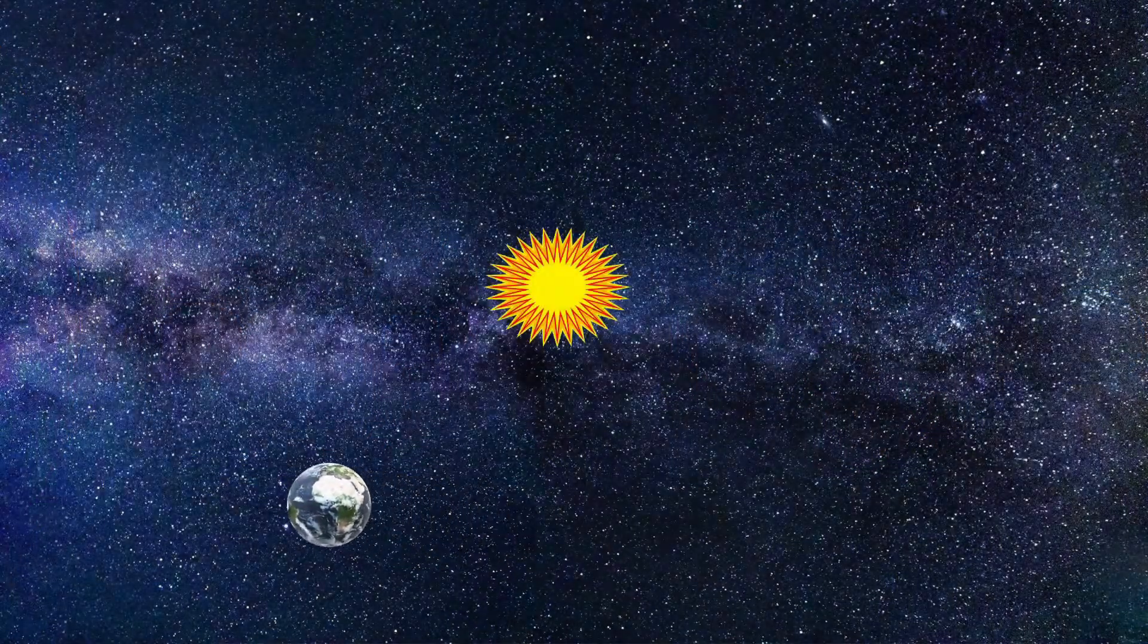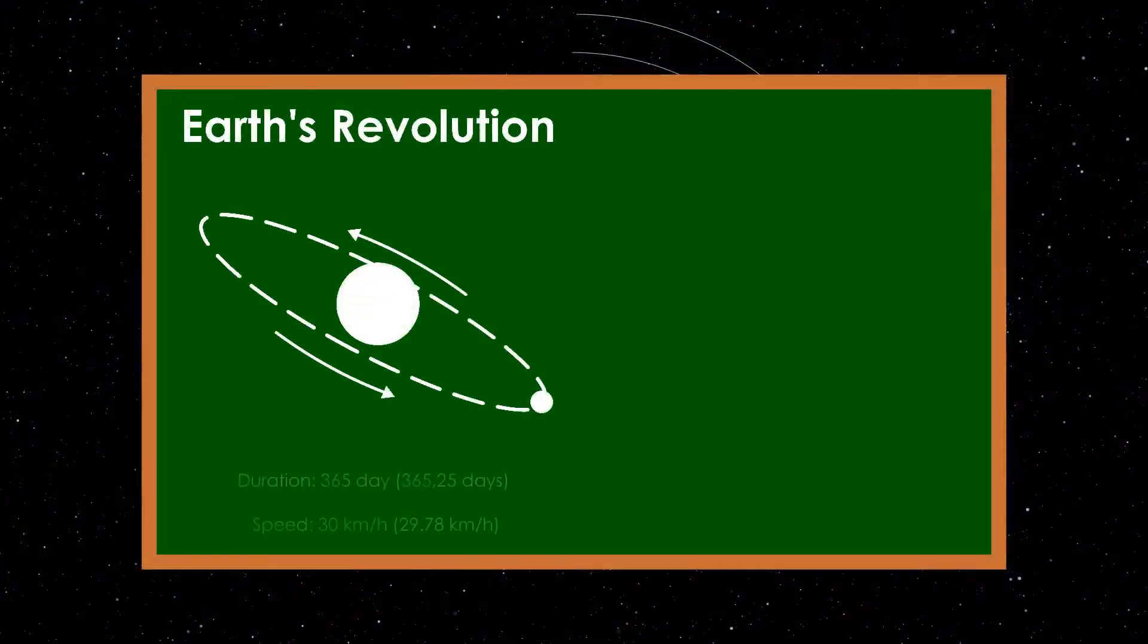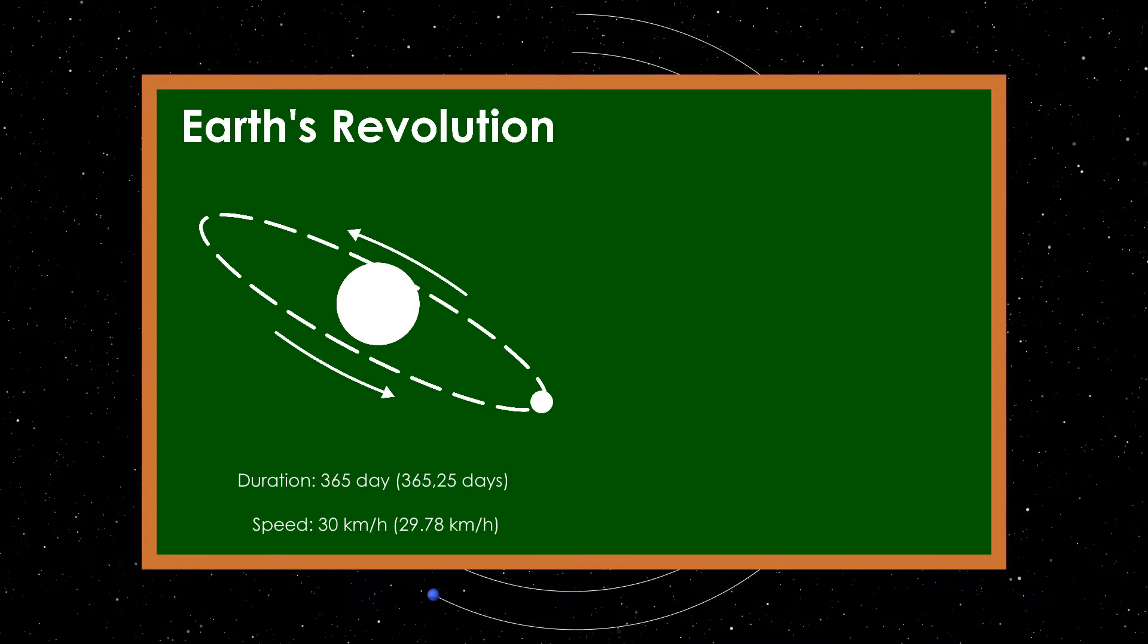The Earth performs two types of movement. The first movement is around the Sun, called revolution, and lasts about 365 days at a speed of 30 kilometers per hour. When Earth completes one movement like that, that means one year has passed. The consequences of such movement cause a change of seasons.